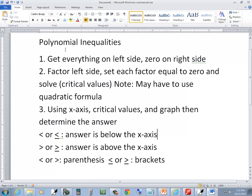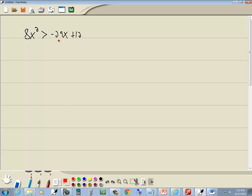Step 1 is get everything on the left side, zero on the right side. So I'm going to take the negative 29x plus 12 and move it over to the left side. So we got 8x squared plus 29x minus 12 is greater than zero.